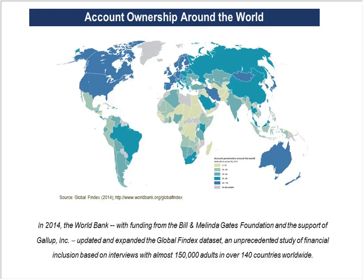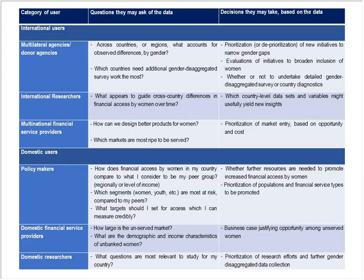We've made tremendous strides in access to accounts. Now the great challenge is the use of those accounts, especially for women — the use of payments, and what I consider the most important payment of all: payments to oneself, using their accounts to save and make payments. This Global Findex project was made possible through the generous support of the Bill and Melinda Gates Foundation and a tremendous partnership with Gallup.